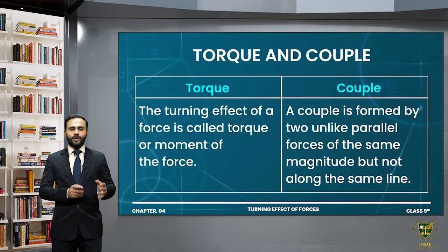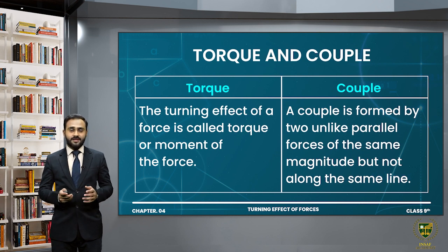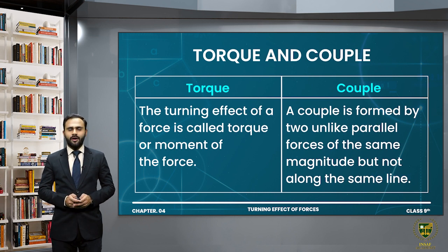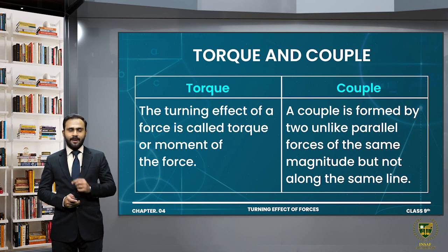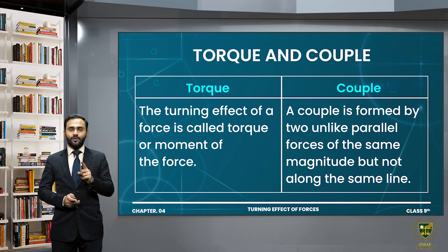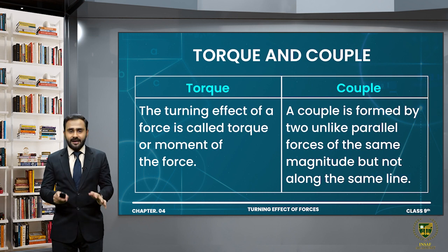Next, differentiating torque and couple. The turning effect of a force is called torque or moment of a force, with formula torque = F × L. In the case of a couple, a couple is formed by two unlike parallel forces of the same magnitude but not acting along the same line — when two unlike parallel forces of same magnitude act on different lines, a couple is formed.